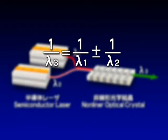In other words, by controlling lambda-1 and lambda-2, lambda-3 can be custom-made.